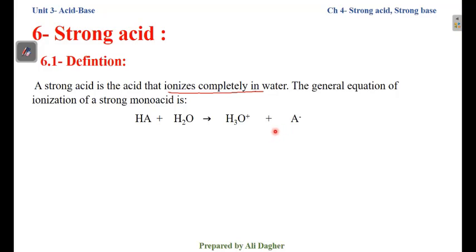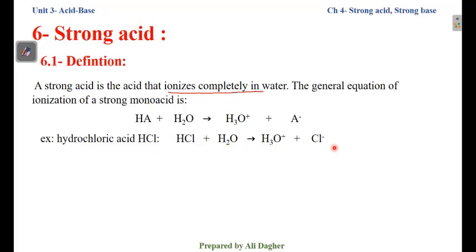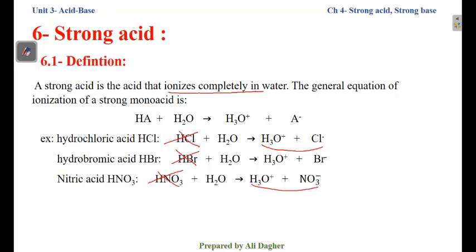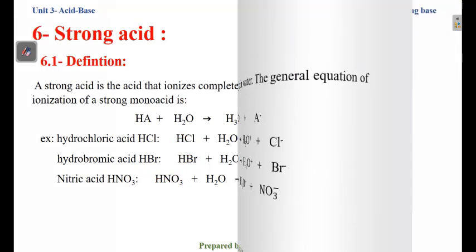Examples of strong acid ionization: HCl + H2O → H3O⁺ + Cl⁻, so the hydrochloric acid solution contains only H3O⁺ and Cl⁻ — no HCl remains. Similarly, HBr + H2O → H3O⁺ + Br⁻, so the solution contains only H3O⁺ and Br⁻. Also, nitric acid: HNO3 + H2O → H3O⁺ + NO3⁻, so the solution contains only H3O⁺ and NO3⁻.